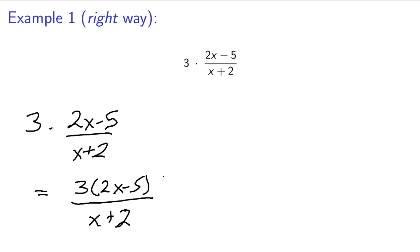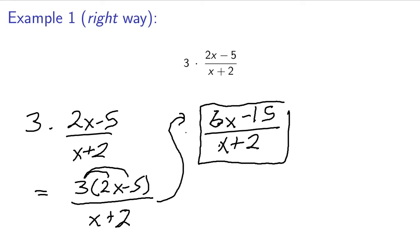So 3 times 2x minus 5 over x plus 2. Now let's go ahead and finish this up. I want to simplify this by distributing this 3. So I get 6x minus 15 over x plus 2. Should be an equal sign there. So that is going to be the way that we do this.